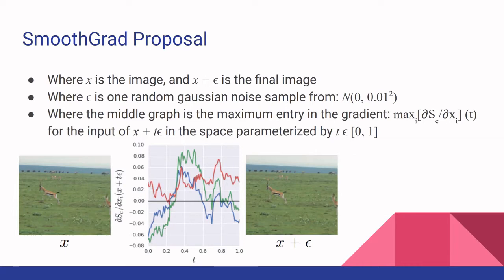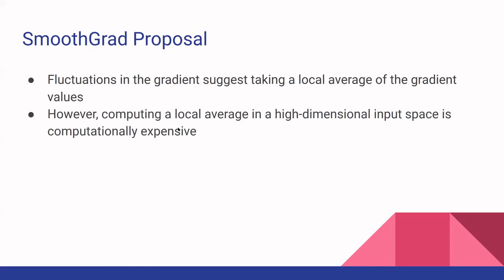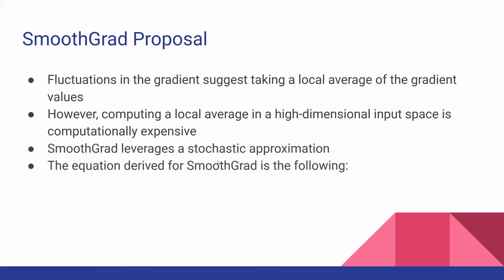You have the red pixel channel, blue pixels, and green channel. By varying the scale of the Gaussian noise, you see it actually fluctuates. From this, they propose that to alleviate this issue, they take a local average of the gradient values. Because taking this in a high input space is expensive, they propose using a stochastic approximation — adding the input image X with a Gaussian noise sample of mean 0 and a set standard deviation, computing the gradient map, and averaging over the number of samples.